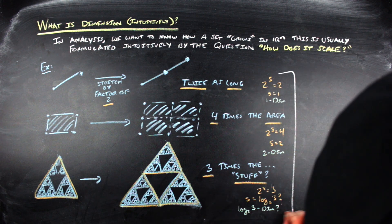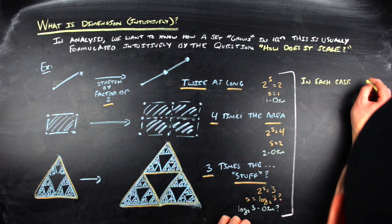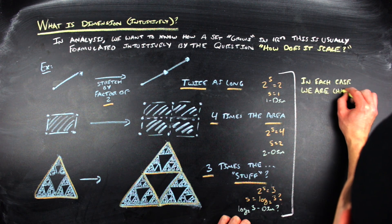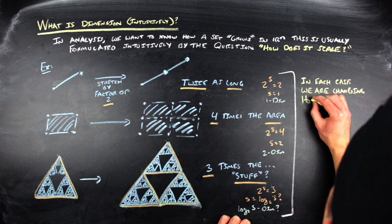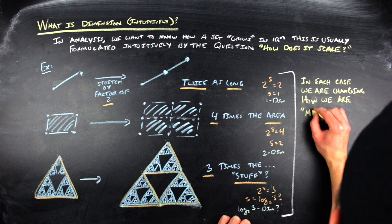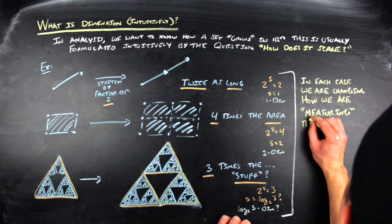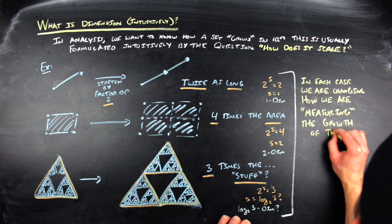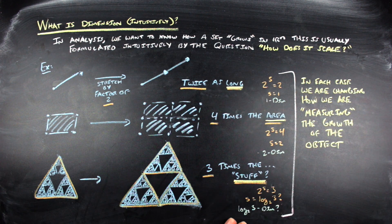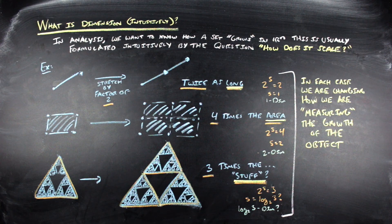And then the second thing that's happening is that we're changing our measure, the way that we are measuring the object. In the first example, we're using length. In the second example, we're using area. And the third example, we're using something that's not those two things because it's not area and it's not length, but we're getting three times as much of it. Before we get into how we're measuring it, we should start with why we say it's a certain dimension part, which also can be explained intuitively.